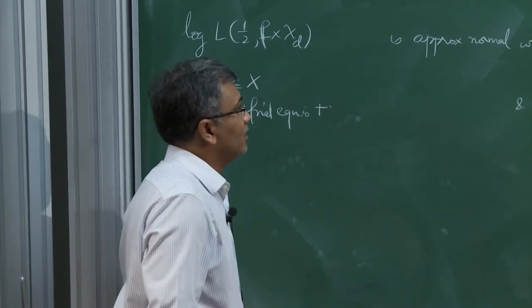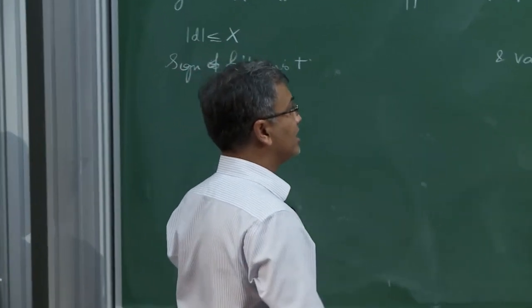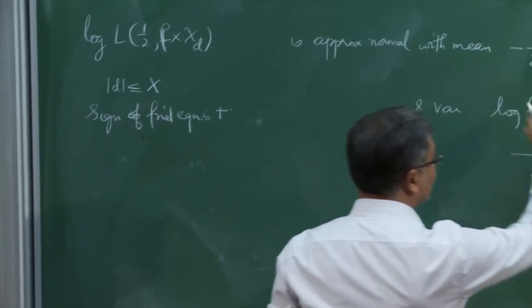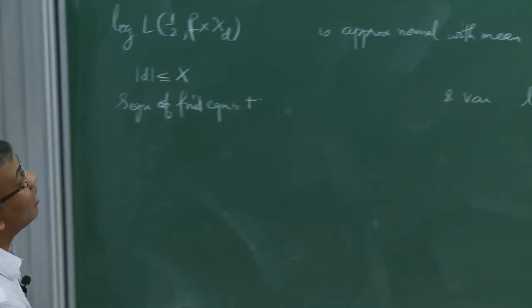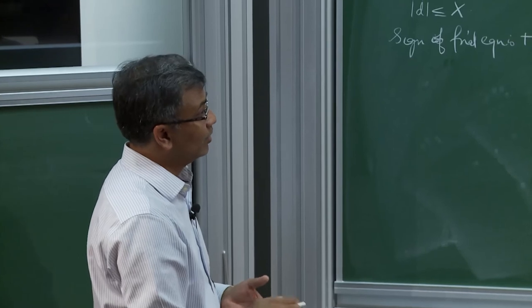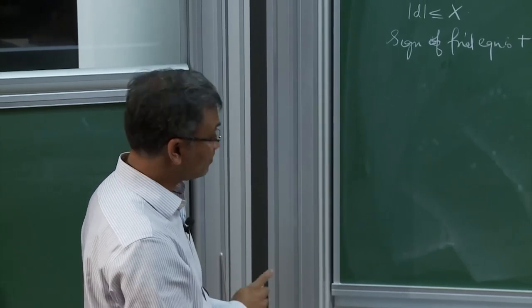Let me give a heuristic explanation for where these central limit theorems come from, and then state some recent results on upper bounds for moments.